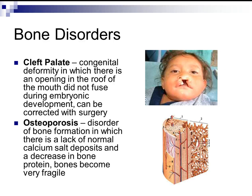Bone disorders: A cleft palate is a congenital deformity — present at birth — in which there is an opening in the roof of the mouth that did not fuse during embryonic development. It can be corrected with surgery. The problem is that babies cannot form a good suction around a bottle to nurse properly, and they can also take in air through their nasal passage when feeding.